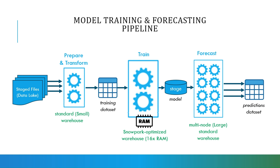When you call the forecast method on a model — which is the most important method of the forecast class — it is recommended, if you are serving this model to multiple users, to use a multi-node large standard warehouse. This is typical practice in Snowpark ML. So to summarize: use a Snowpark Optimized Warehouse for training and a multi-node standard warehouse for serving. Keep in mind we're talking about large datasets here — millions or even billions of data points, not the thousands of lines used in simpler examples.